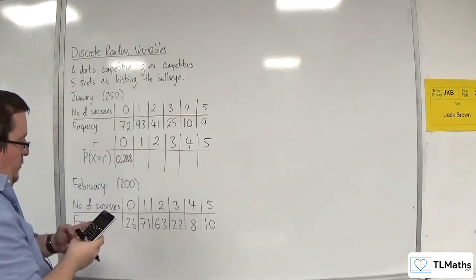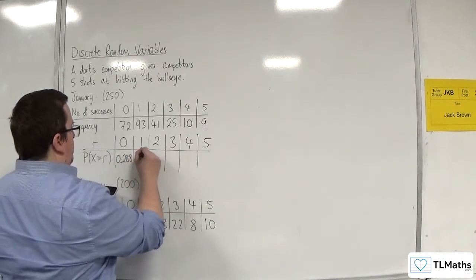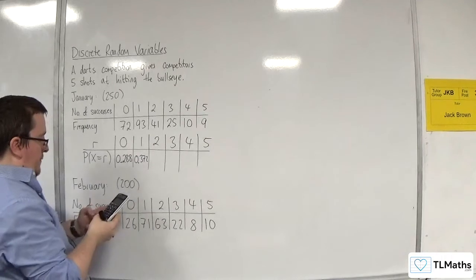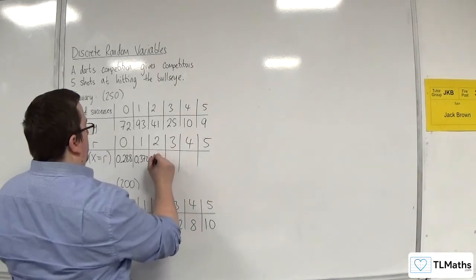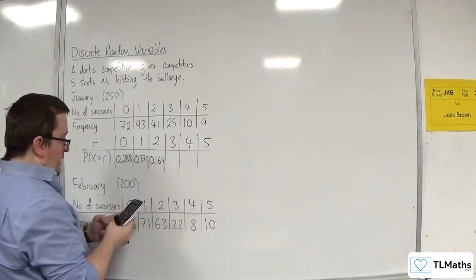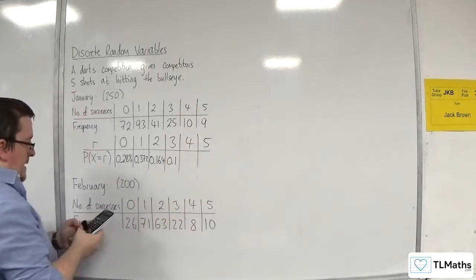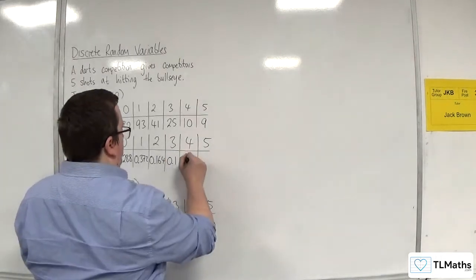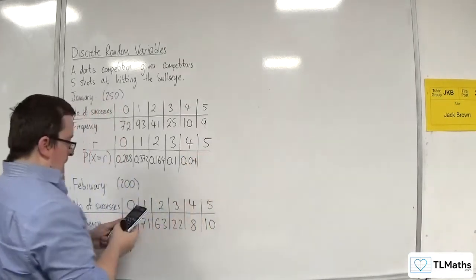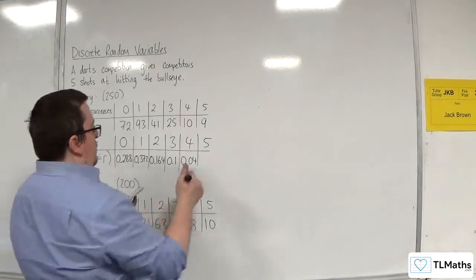Then 93 divided by 250, so 0.372. Then 41 divided by 250 is 0.164. 25 divided by 250 is one tenth, so 0.1. 10 divided by 250 is 0.04. And 9 divided by 250 is 0.036.